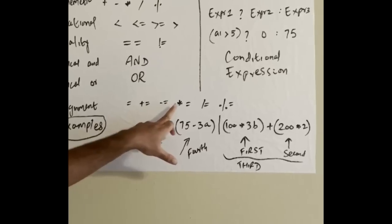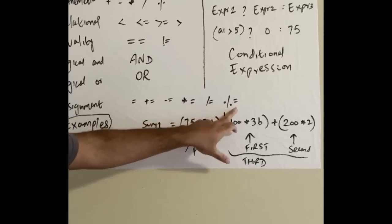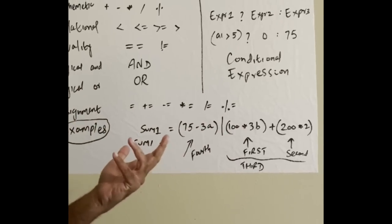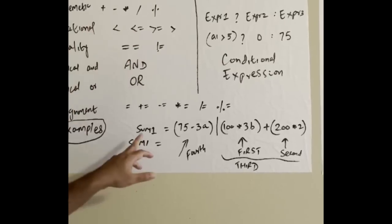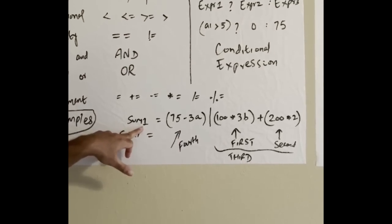At the last is assignment operations like equal to, plus equal to, minus equal to, multiplication equal to, division equals, and percentage equals. When we give examples I'll try to explain each of these. For example, this is one example: sum is a variable.